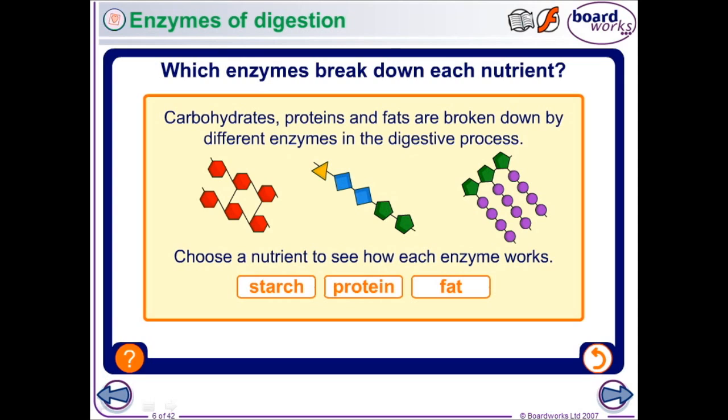So you should now be aware that there are lots of different enzymes involved in helping us digest our food. You should be specifically aware that amylase helps break down starch, the family of enzymes called proteases are used to break down proteins, and the family of lipase enzymes help to break down fat molecules.